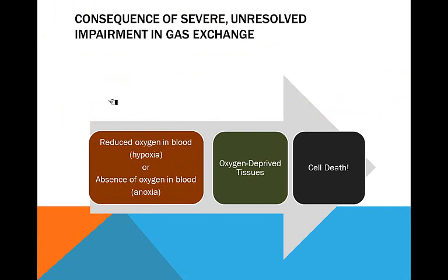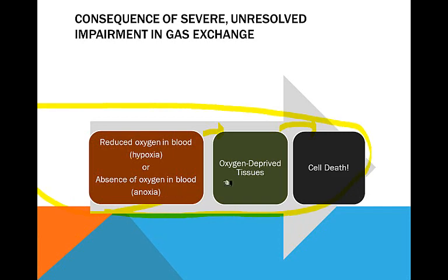If you have impairment in gas exchange, you're going to get hypoxia — reduction in oxygen in your blood — or even anoxia, the total absence of oxygen. That's going to cause oxygen-deprived tissues and ultimately cell death. No matter what organ this takes place in, none of them like being deprived of oxygen. If it's your heart, you'll have an MI. If it's your kidneys not getting enough blood perfusion, you'll have renal failure.